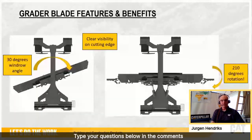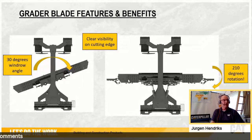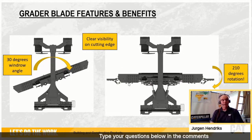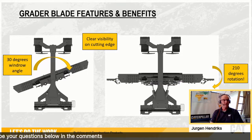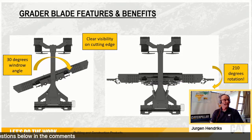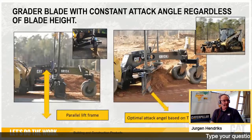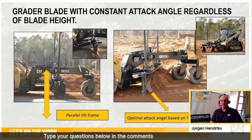The grader blade has a 30-degree windrow angle, clear visibility on the cutting edge with mirrors, and 210-degree rotation of the wings — which allows you to convert a winged blade into a box blade configuration. The advantage of this grader blade is that it maintains a constant aggressive attack angle on the blade because of the parallel lift frame.